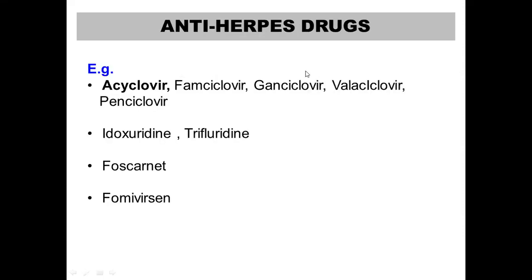Let us look at the examples of anti-herpes drugs. Principally we have acyclovir and similar drugs — famciclovir, ganciclovir, valacyclovir, penciclovir and so on. We'll mainly look at the complete pharmacology of acyclovir. Then you have idoxuridine and trifluridine. Other drugs are foscarnet and fomivirsen. We'll mainly focus on acyclovir and have a brief look at the other drugs.